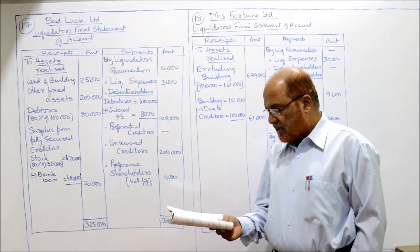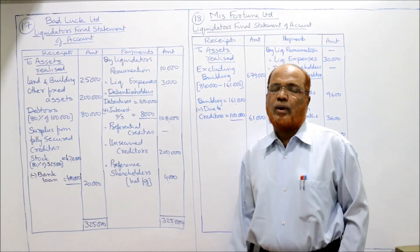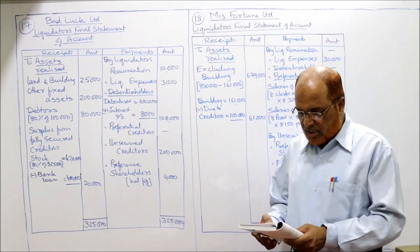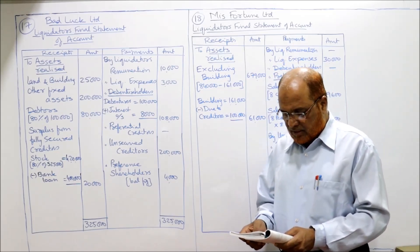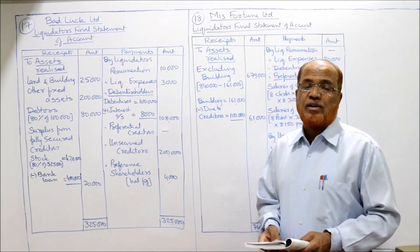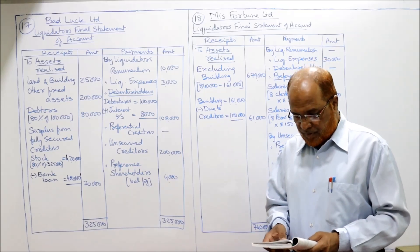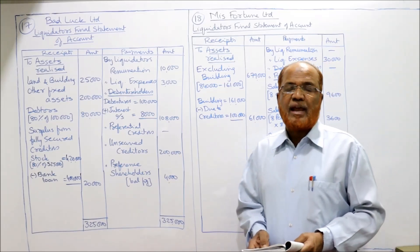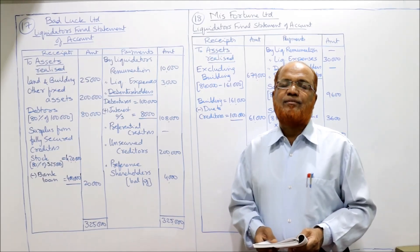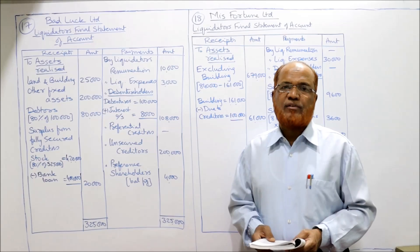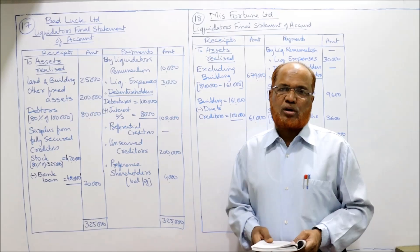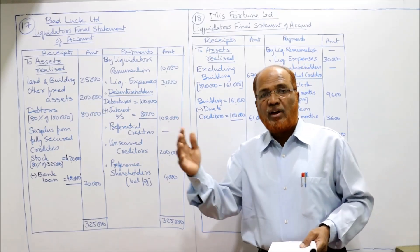Fixed assets were realized at book values, and current assets at 80% of book values. So the land and building and other fixed assets are realized at the same balance sheet values. For current assets — stock book value is 5,25,000, so 80% of 5,25,000 gives 4,20,000. That 4,20,000 is the realizable value of stock, but stock was already pledged with the bank.